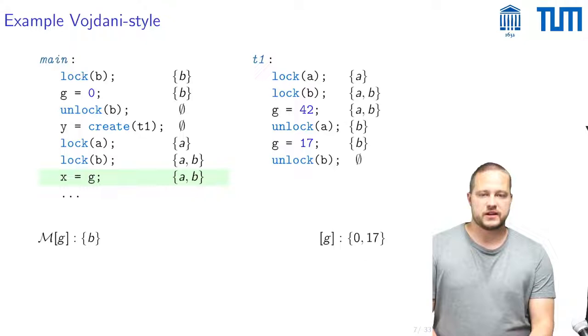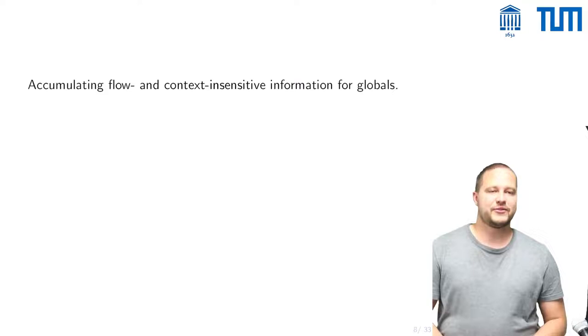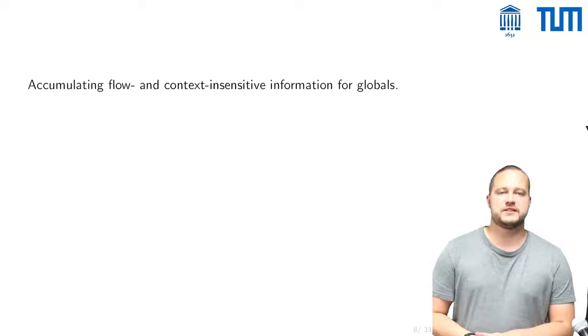And then when one actually wants to find out the value that we read for X we would simply consult this unknown again and find that the value for X that one reads is either 0 or 17. Now what you have already seen while we were doing this example is that we found it convenient to accumulate flow and context insensitive information for this global G while we were doing an analysis that is context and flow sensitive.